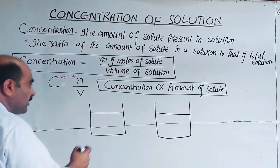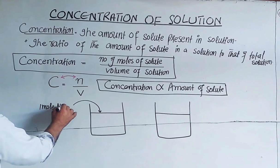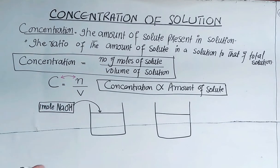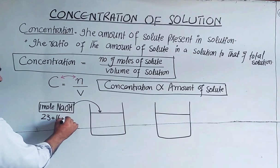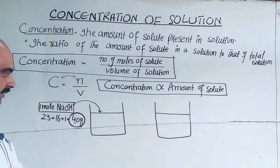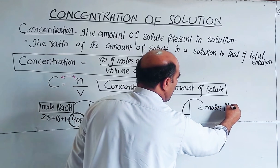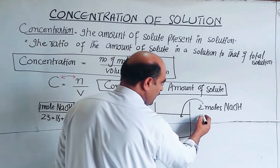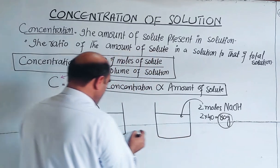For example, consider one mole sodium hydroxide. One mole sodium hydroxide has a mass of 40 grams — sodium atomic mass 23, oxygen atomic mass 16, hydrogen atomic mass 1, total 40. So 40 grams of sodium hydroxide equals one mole. For two moles sodium hydroxide: two multiplied by 40 equals 80 grams sodium hydroxide.